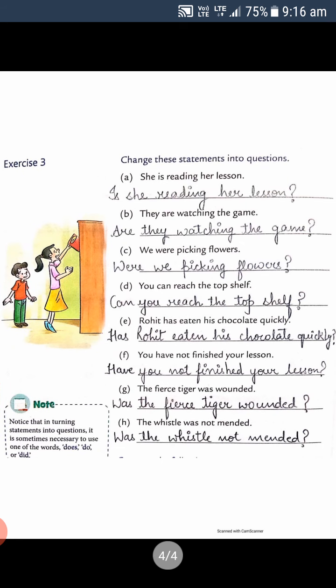Now exercise number three: change these statements into questions. 'She is reading her lesson' — we put the helping verb first to start the question: 'Is she reading her lesson?' — put question mark. 'They are watching the game' becomes 'Are they watching the game?' — put question mark.